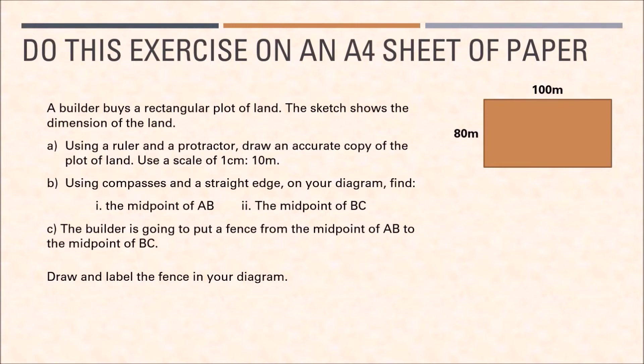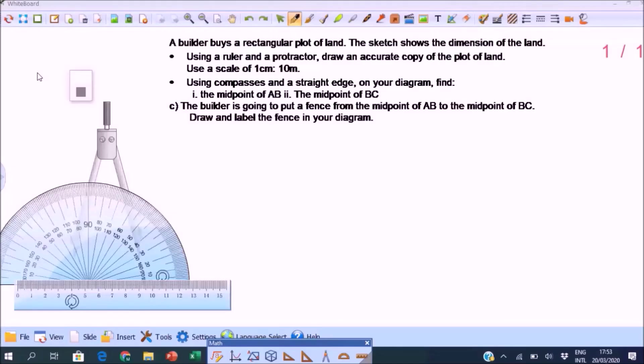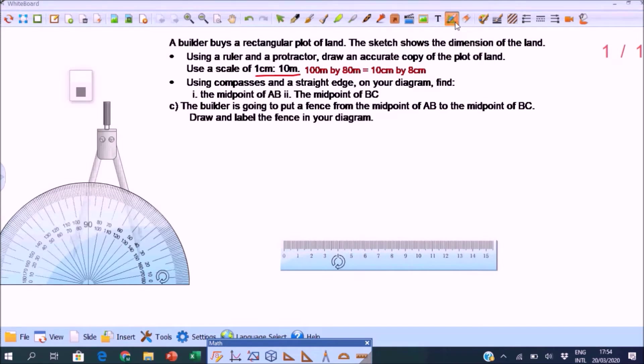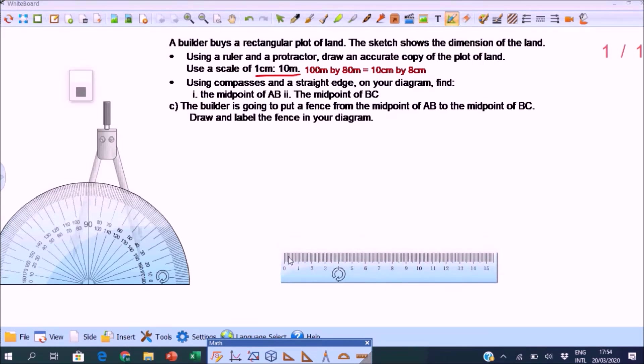Now I will show you how the exercise should be done. So first, we have to draw the rectangular plot of land using the scale 1 cm to 10 meters. So that means 100 by 80 meters is actually 10 cm by 8 cm in our drawing. So let's use our ruler to measure the 10 cm. 0 to 10 cm. So that's how long it is.